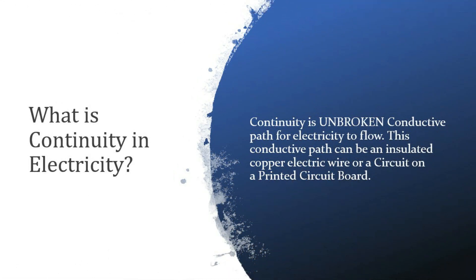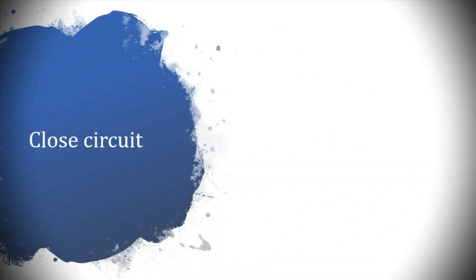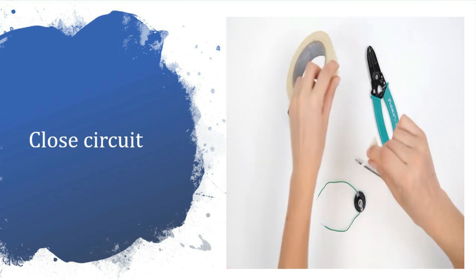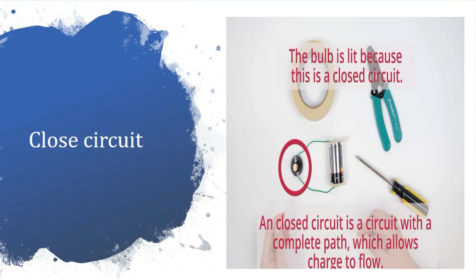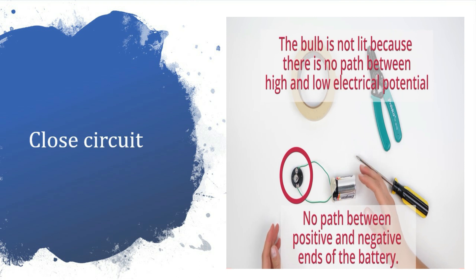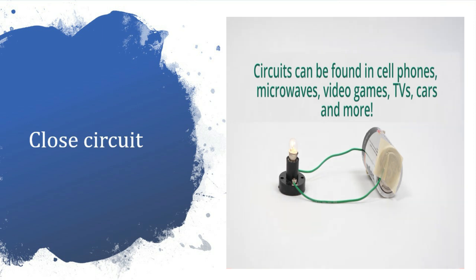What is continuity in electricity? Continuity is an unbroken conductive path for electricity to flow. This conductive path can be an insulated copper electric wire, or a circuit on a printed circuit board. A closed circuit means a complete electrical connection around which current flows or circulates. When you have a series of electrical wires connecting to each other and completing a circuit so that current travels from one end to the other, this is an example of a closed circuit.